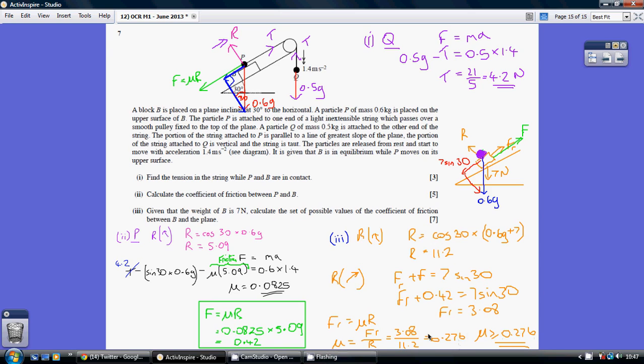That allows us to work out that our mu must be at least 0.276. Obviously it can be greater than this, but that's the minimum amount before there's any movement. So mu is greater than or equal to 0.276.